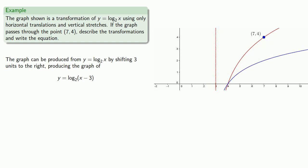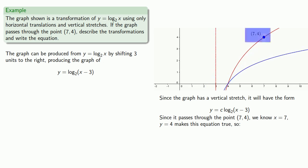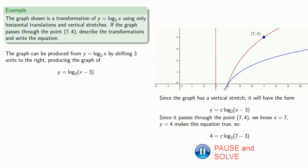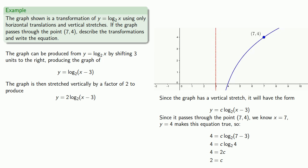Since we're told the graph has a vertical stretch, we know it will have the form y equals some constant c times log base 2 of x minus 3. And since it passes through the point (7, 4), we know that x equals 7, y equals 4 makes this equation true. We can solve this equation for c, which tells us that the graph is stretched vertically by a factor of 2, to produce the graph of y equals 2 log base 2 of x minus 3.